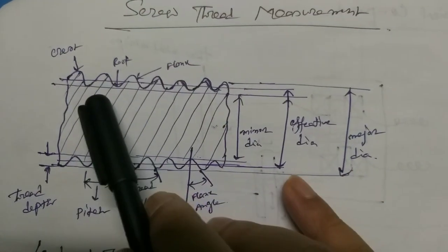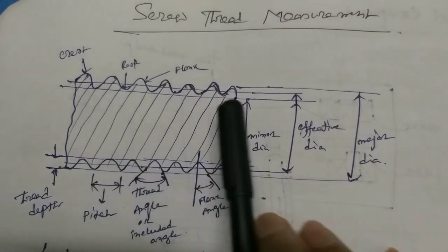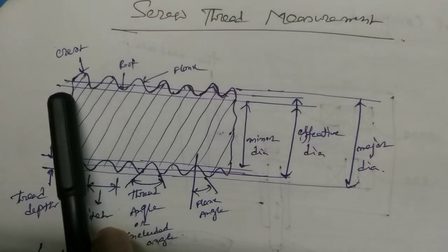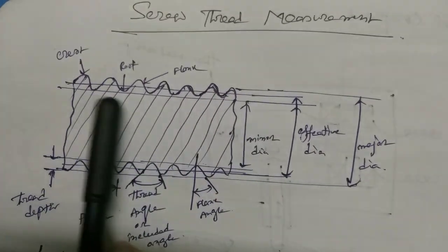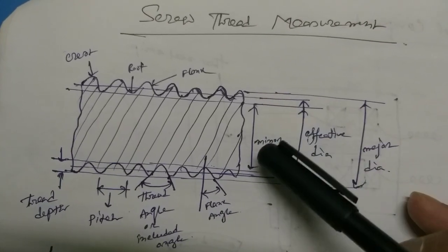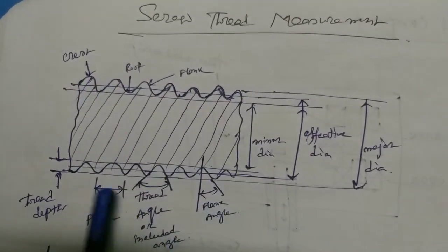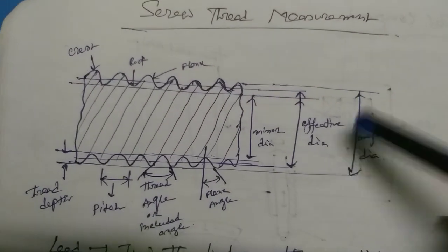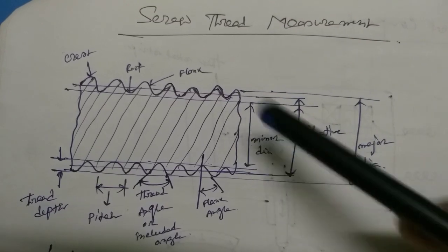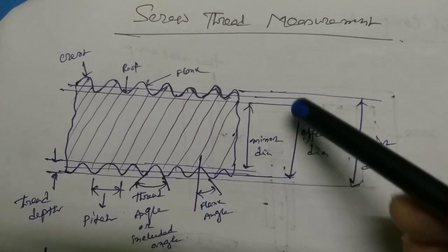The thread has several diameter measurements. The distance between two roots gives the root diameter. Drawing a line joining the roots gives us the root diameter. We also draw a line in between the crests and the root — in the middle portion — and extend it to define the effective diameter.